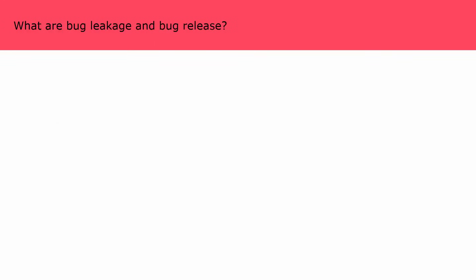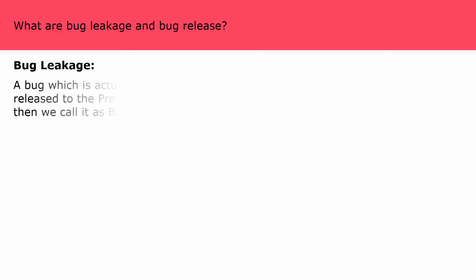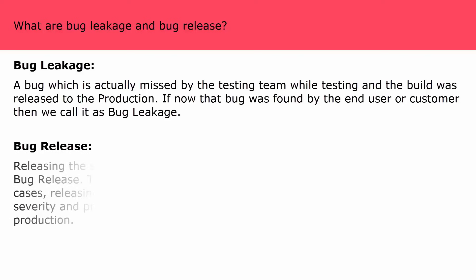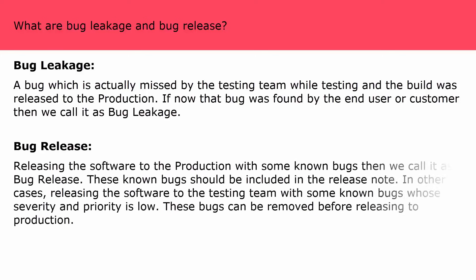What are bug leakage and bug release? Bug leakage: a bug missed by the testing team while testing — the build was released to production, and the bug was then found by the end user or customer. Bug release: releasing software to production with some known bugs is called bug release. These known bugs should be included in the release note. Alternatively, releasing software to the testing team with some known bugs of low severity and priority — these bugs can be removed before releasing to production.